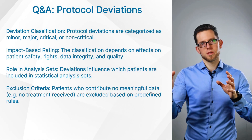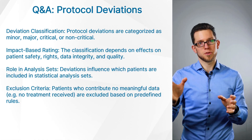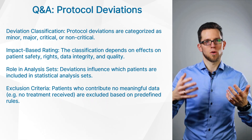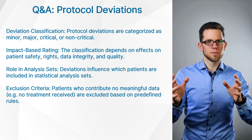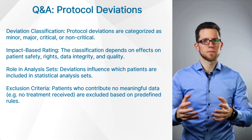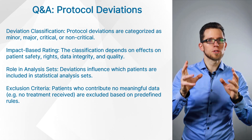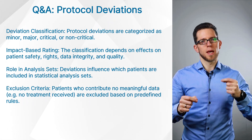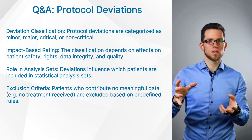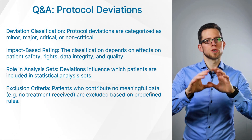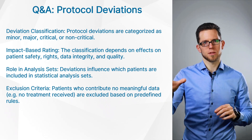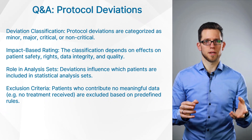The post-processing is also really important and interesting. Protocol deviations are categorized usually as minor or major, and sometimes also as critical or non-critical for the evaluation. The outcome at the end of the day should depend on the impact on patient safety, patient rights, data integrity, and data quality. That usually determines whether something is rated as major, which has a big impact on any of these four categories, or minor.